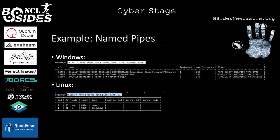Another example is named pipes. Named pipes are commonly used by malicious actors to pass information between processes — for example between a beacon and a sacrificial process. On Windows, if you query all pipes with a certain name, you can see the type of pipe, flags, and names. However on Linux, you don't see the name of the pipe — you only see the type, the file descriptor, and the PID the pipe belongs to.